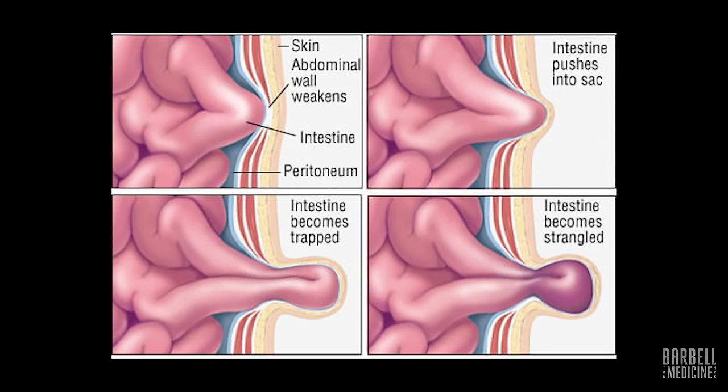One other thing to mention — sometimes the complications make their way into the naming of the hernia. You might hear terms such as reducible, meaning you can push the hernia back in through the defect in the cavity it was normally enclosed in. Or an incarcerated hernia, which means the hernia is trapped and cannot be reduced, causing reduced blood flow. Also strangulation, which leads to ischemia — lack of blood flow — and necrosis, or death, of the contents of the hernia.